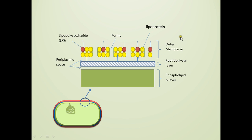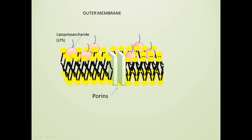The outer membrane is a unique structure found in gram-negative bacteria. It is a phospholipid bilayer with two unique components. First, it contains lipopolysaccharide (LPS), which provides the gram-negative bacteria with some toxicity. It also has integral proteins called porins embedded within it, which form channels through the outer membrane so that materials can move in and out.